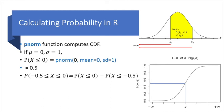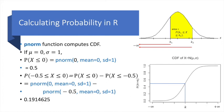Next, we can compute a range between 0 and negative 0.5. So first, we call pnorm for the higher value, and then we subtract the result of calling pnorm with the lower value. And the answer is approximately 0.19.